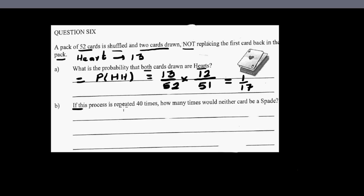Now the second question is if this process is repeated 40 times, how many times would neither of the cards be spades? Well there are 13 spades. Not spade - the question is not a spade. So there are how many cards which are not spades? That would be 52 minus 13 which is 39.